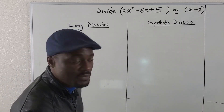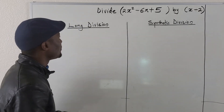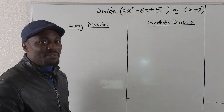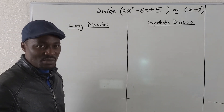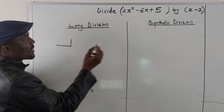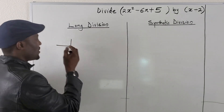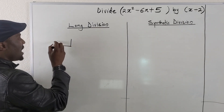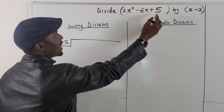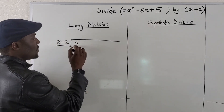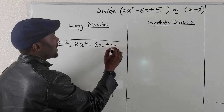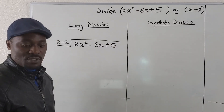Let me show you how to do long division. You do this as if you're doing a fifth-grade long division. You write the divisor on the outside — x minus 2. And on the inside, you write the numerator, which will be 2x squared minus 6x plus 5. Now you divide.